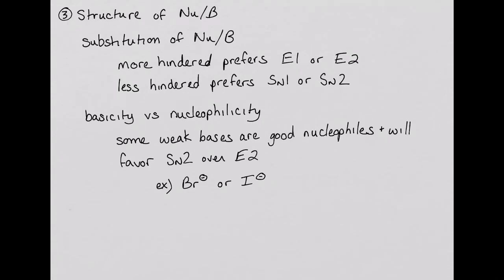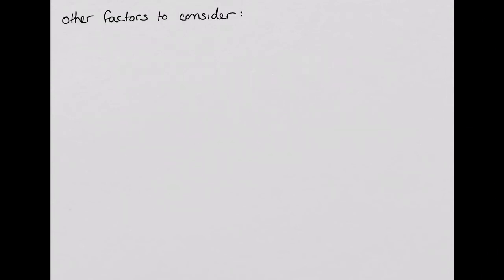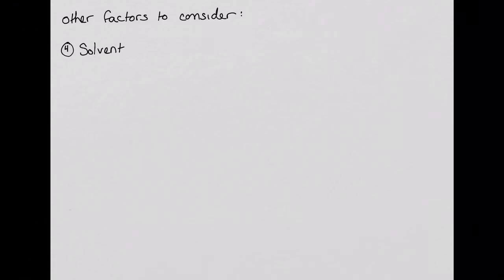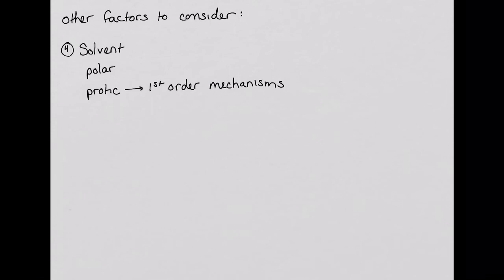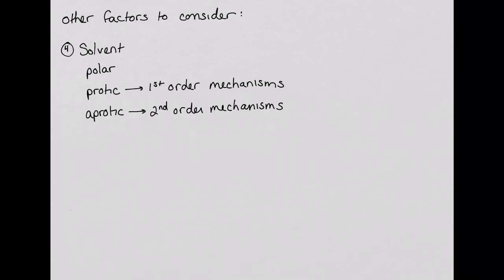There are two other factors to consider when determining which of the four mechanisms will predominate. The first is solvent. Polar solvents are good for both types of elimination and substitution mechanisms because they are good at solubilizing the reactants. Polar protic solvents tend to favor the first-order mechanisms, because they are good at stabilizing the charged intermediates and transition states that form in these first-order mechanisms. Conversely, polar aprotic solvents tend to favor second-order mechanisms, since protic solvents hinder second-order mechanisms by weakening the base or nucleophile.